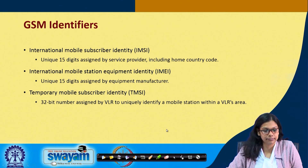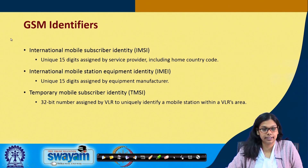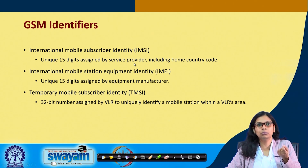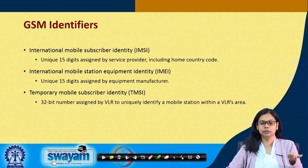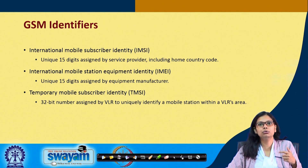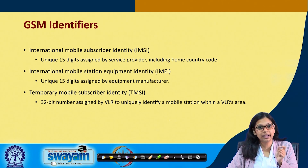An important topic is GSM identifiers - how a GSM is identified. The first one is International Mobile Subscriber Identity, called IMSI. This is a unique 15-digit number assigned by the service provider, including the home country code. So when you move to another country and use the same SIM, that unique country code will be attached to it.